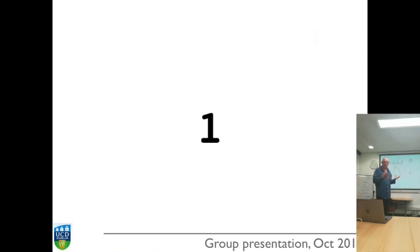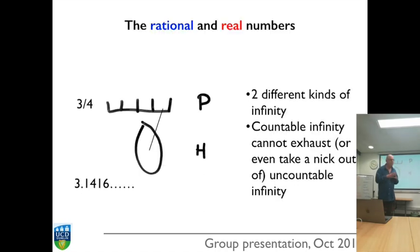I want to walk through five worked examples of the application of this so that you all get confident in this use. The first application is perhaps the most informative. I'm going to use a mathematical analogy here. I'm going to contrast the rational numbers and the real numbers. The rational numbers belong to P and the real numbers belong to H.